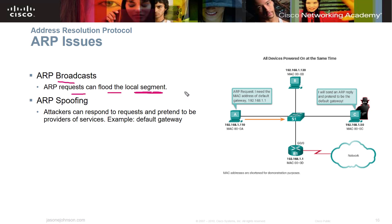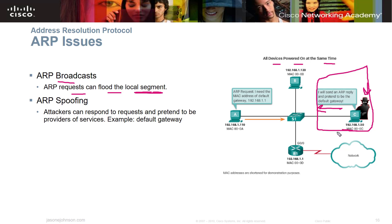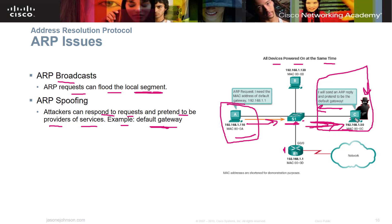ARP can present some issues. ARP broadcasts can flood the local segment — if all devices are powered on at the same time, they start doing ARP requests and it can consume bandwidth. A security concern is ARP spoofing: an attacker can send an ARP reply pretending to be the default gateway. The switch gets spoofed and routes all internet-bound traffic through the attacker's device, allowing the attacker to sniff and read all traffic going through — not just ARP requests, but other information as well.